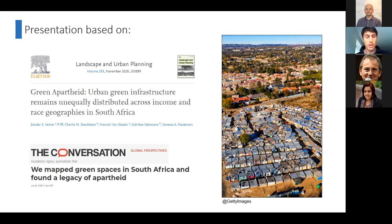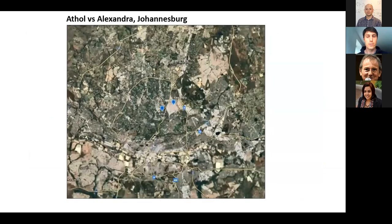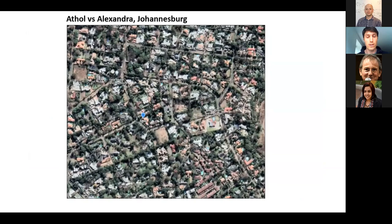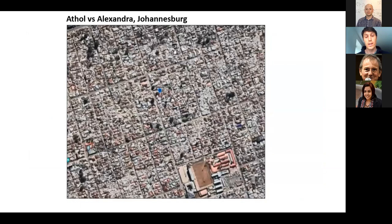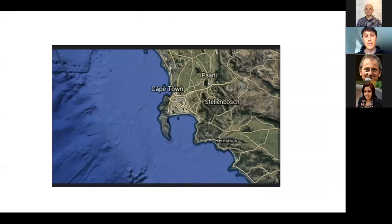I'll start with anecdotes of spatial inequalities. Zooming into two suburbs in Joburg: Athol, which has relatively a lot of tree cover and low-density housing, compared to just a kilometer away, Alexandra, which is quite a densely populated area with relatively few trees scattered around.